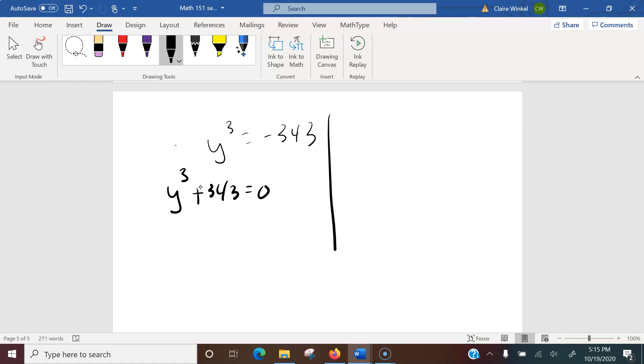Now from here, you can solve it using the graphing technique. So you can graph this, find a real zero, and then divide. Or you could factor using the sum of cubes factoring formula. I'm going to do the factoring technique, but you'll find the same answers if you do the finding the real zero and dividing.